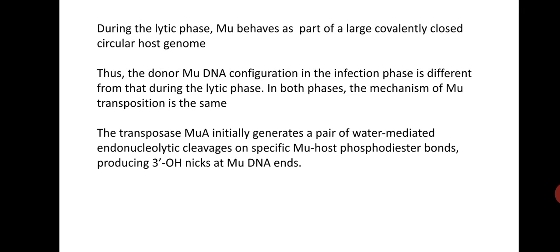The transposase MuA initially generates a pair of water-mediated endonucleolytic cleavages at specific mu-host phosphodiester bonds, producing a 3-OH nick at the mu DNA ends. This endonucleolytic activity leads to the formation of 3-OH groups, which are useful for attacking the target site.